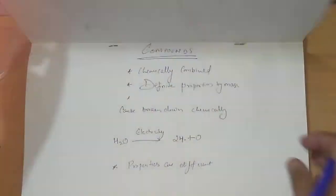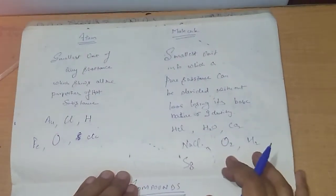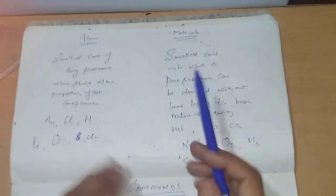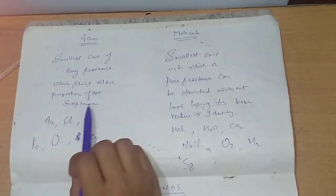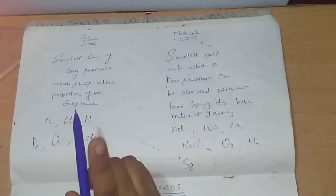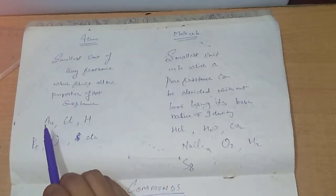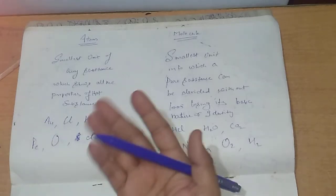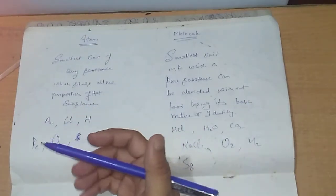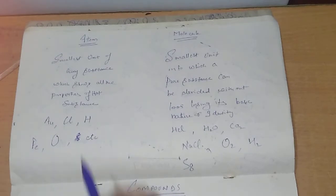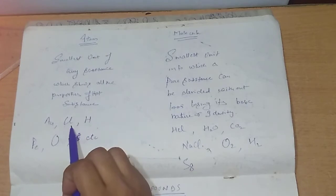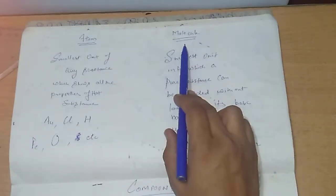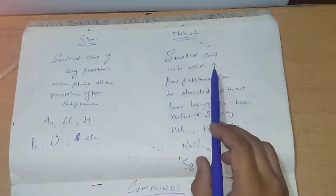We have also discussed one more term: molecule. The basic difference is that an atom is the smallest unit of any substance which shows all the properties of the substance. For example, one gold atom (Au) represents all the properties that a gold ring, gold ornament, or gold biscuit will show. So the smallest unit of a substance which shows all the properties of the substance is called an atom.